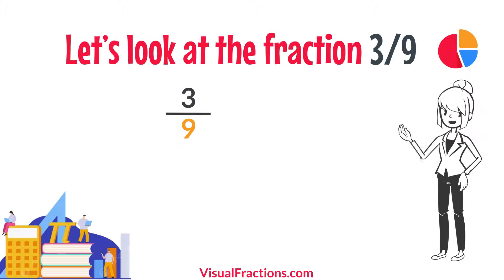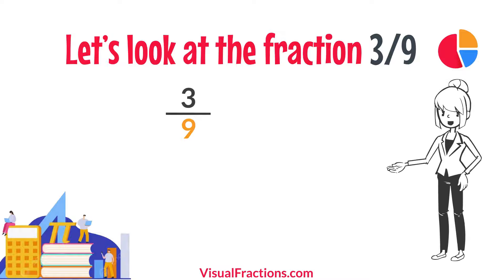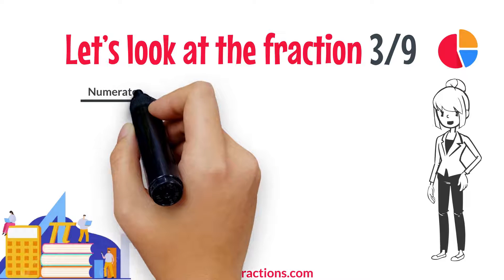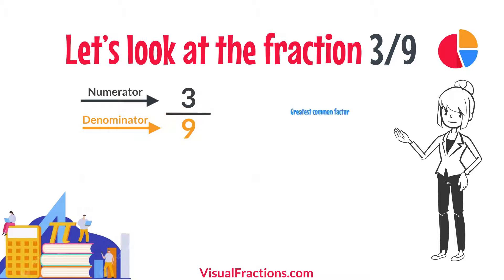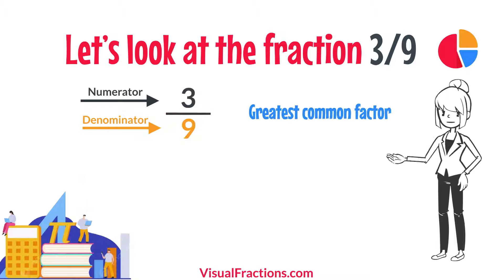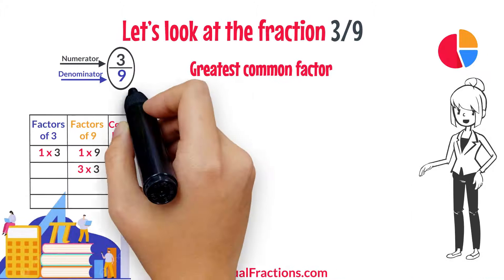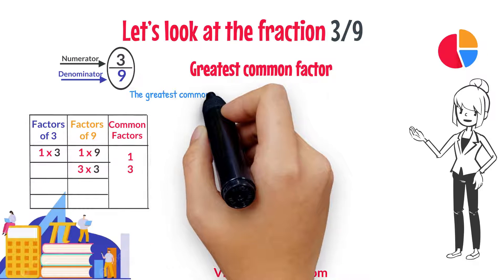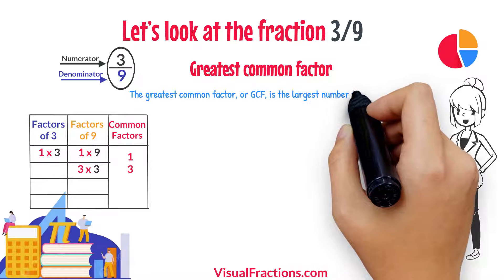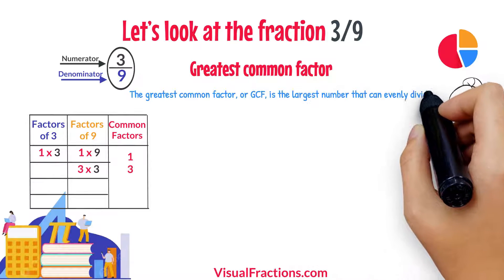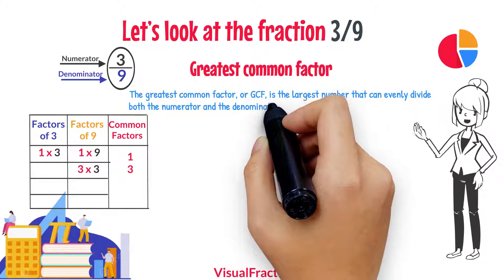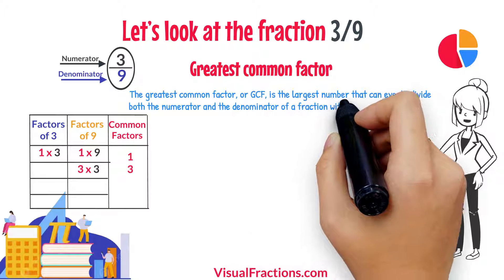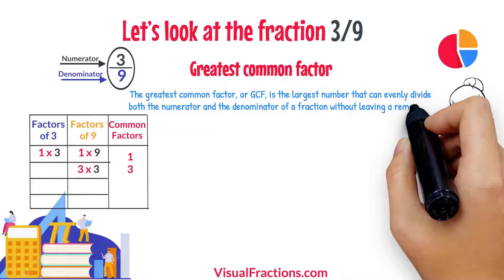Let's look at the fraction 3 ninths. To simplify it, we'll divide both the numerator and the denominator by their greatest common factor. The greatest common factor, or GCF, is the largest number that can evenly divide both the numerator and the denominator of a fraction without leaving a remainder.